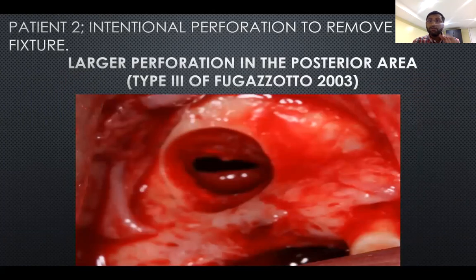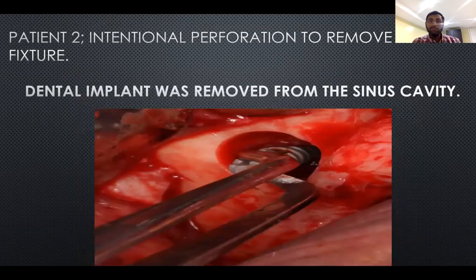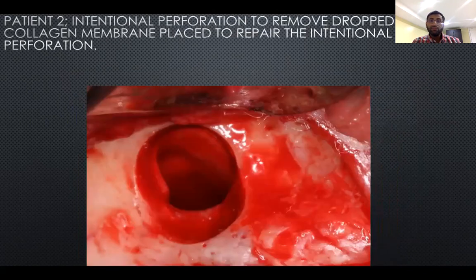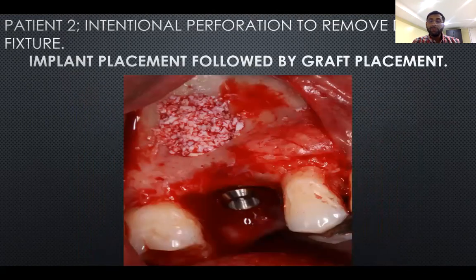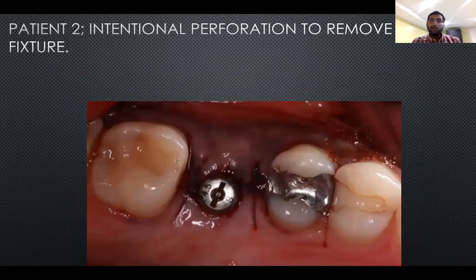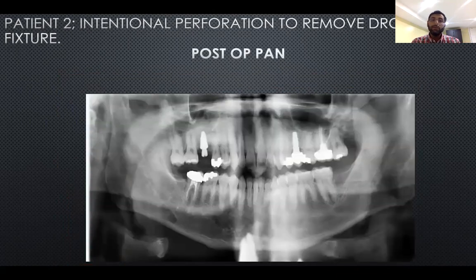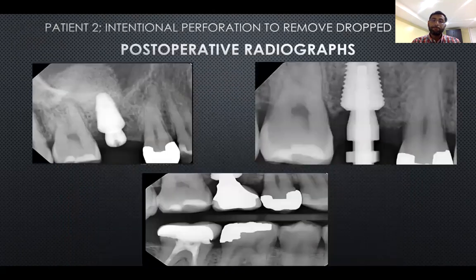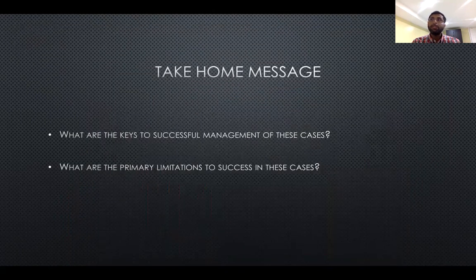An intentional perforation was made in order to remove the fixture. The fixture was removed and then we repaired the perforation, followed by placement of the graft material. A healing button was placed as there was sufficient remaining height and width. There is a final radiograph followed by the final restoration in place.